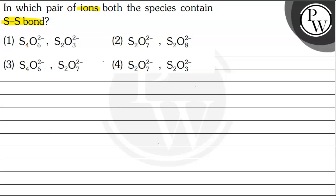So that is S4O6 2- and S2O3 2-. These are the species which actually have S single bond S. Now move on to the structure of this compound.